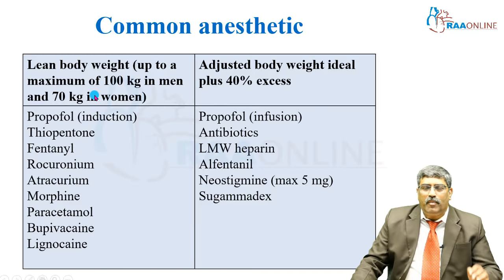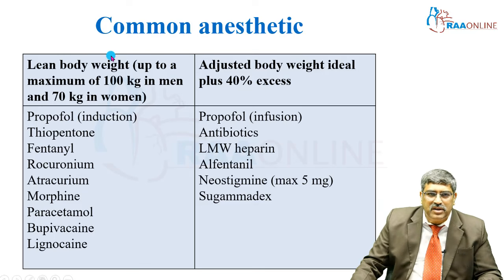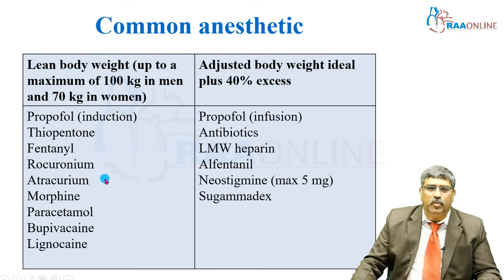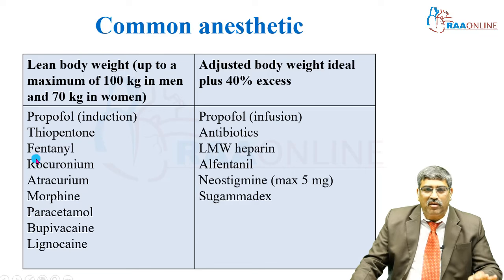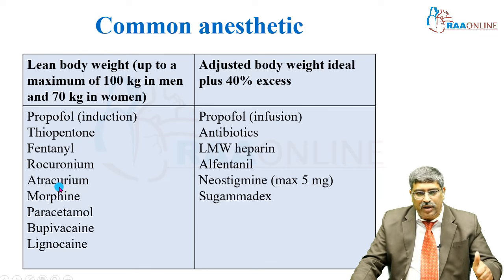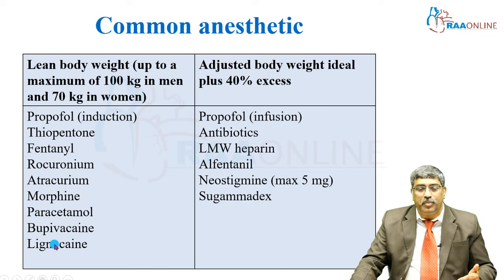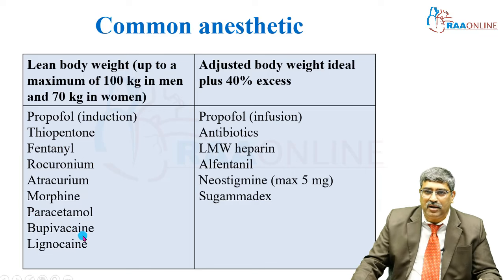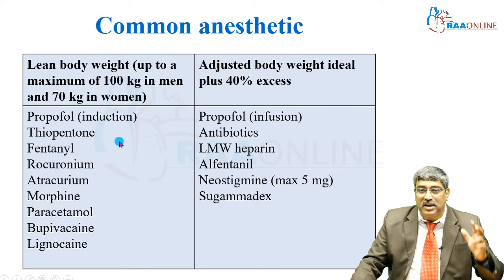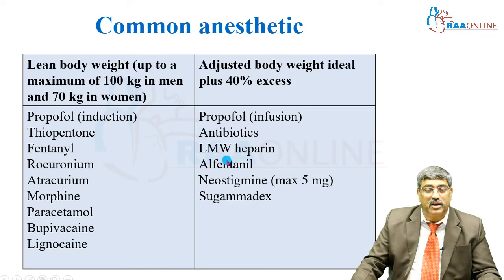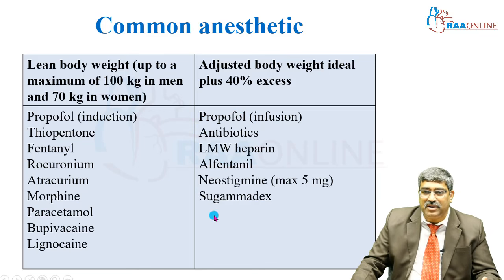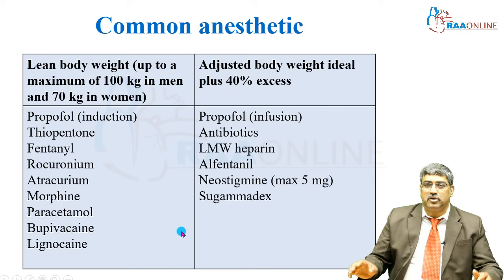The ideal combination is propofol as induction agent, atracurium as muscle relaxant, remifentanil as opioid, and desflurane as inhalation agent. Common anesthetic drugs dosed on lean body weight include propofol for induction, thiopentone, fentanyl, rocuronium, atracurium, morphine, paracetamol, bupivacaine, and lignocaine. Adjusted body weight is used for propofol infusion, antibiotics, low molecular weight heparin, alfentanil, neostigmine, and sugammadex.